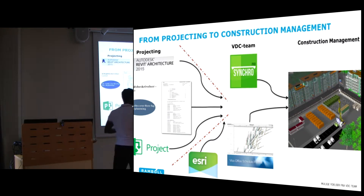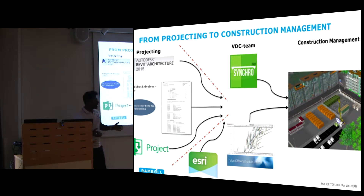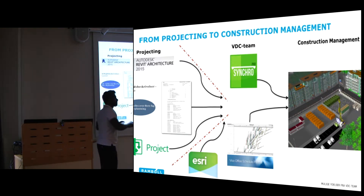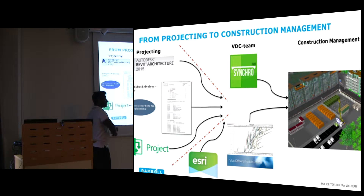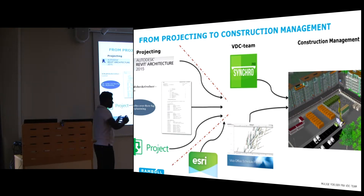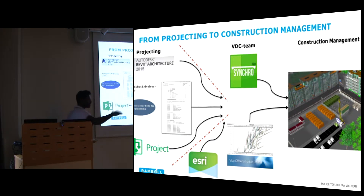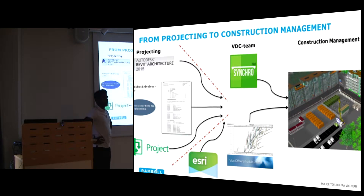It's impossible to build everything exactly to the drawing. There are always changes. We can draw everything, but it's not possible to build everything to the drawing. That's why we use these surface models — the terrains, the contours, everything. It's all used from CityEngine.